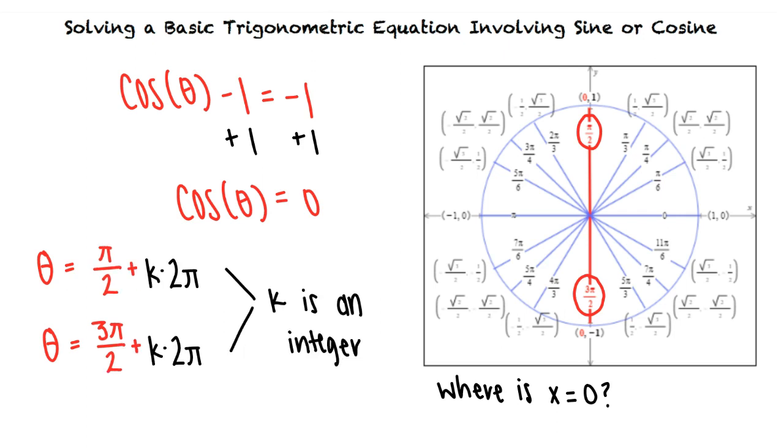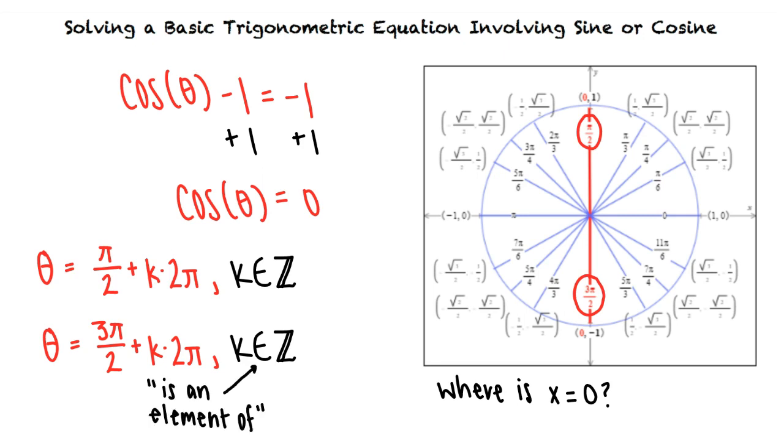Is there a way to identify that k is an integer in our solution? There is. We can use the symbols k element z to represent this. The symbol that looks like an e means is an element of and the symbol that looks like a z represents the set of integers. So by writing k element z at the end of our solution we identify that k is an element of the set of integers.